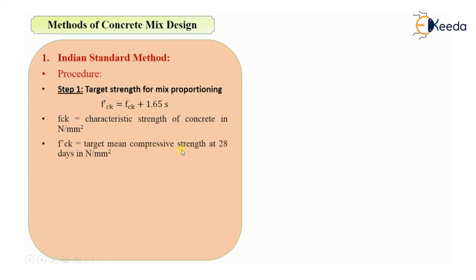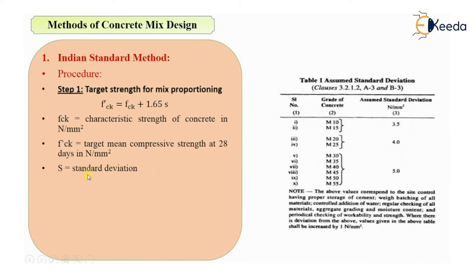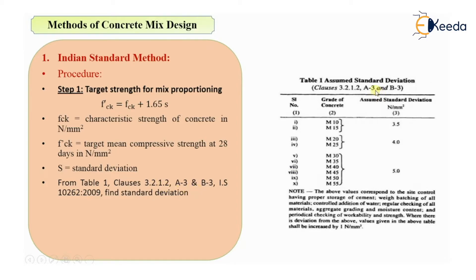F'CK is the target mean compressive strength at 28 days in Newton per mm². S is the standard deviation, which you can take from Table 1, Clause 3.2.1.2, Clauses A3 and B3 from IS10262-2009. For M20 and M25, the standard deviation is 4, and from M30 to M55 the value of standard deviation is 5.